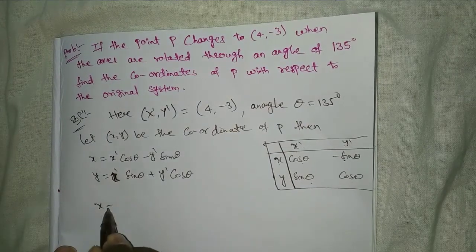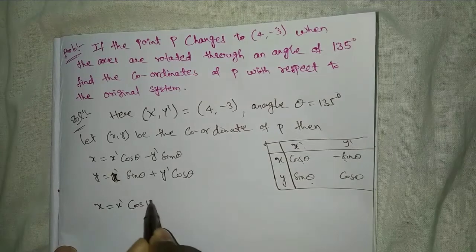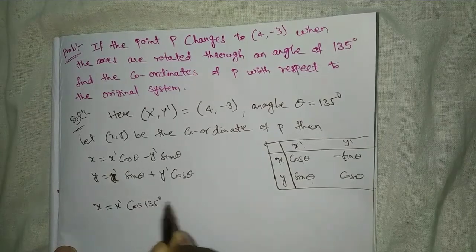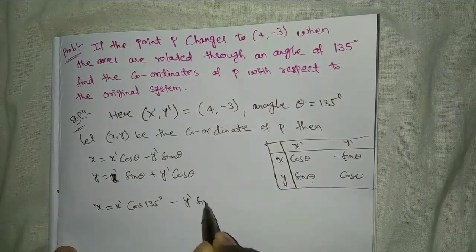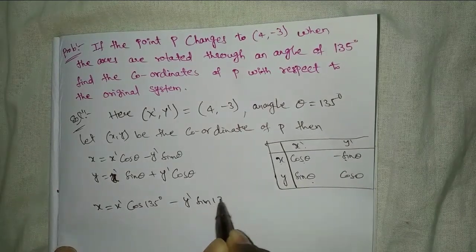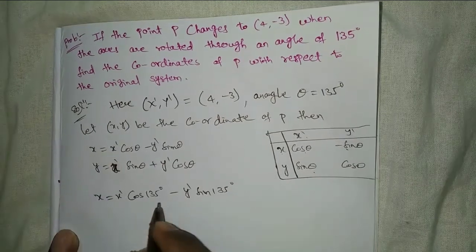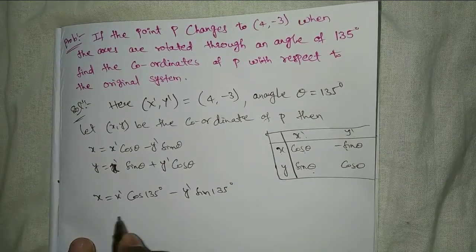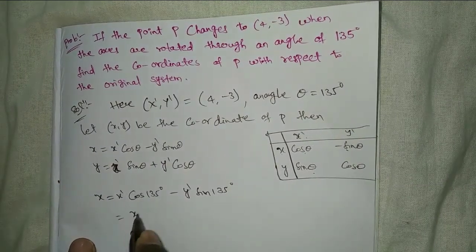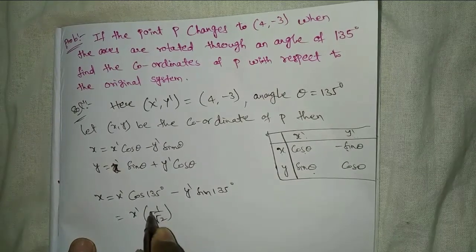Theta equal to 135 degrees. x equal to x dash cos 135 degrees minus y dash sin 135 degrees. cos 135 degrees is minus 1 by root 2, x dash minus 1 by root 2.